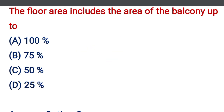The floor area includes the area of the balcony up to — option A: 100%, option B: 75%, option C: 50%.